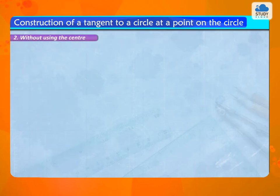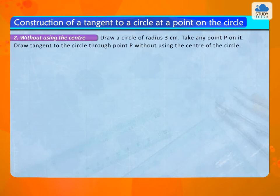Method 2: Without using the center. Example: Draw a circle of radius 3 cm. Take any point P on it. Draw tangent to the circle through point P without using the center of the circle.